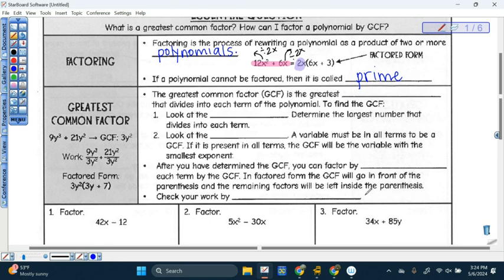So the greatest common factor, which is what we talked about last week, is just the greatest monomial that divides into each term of the polynomial. So to find the greatest common factor, we need to look at first the coefficients and determine the largest number that divides into each of those coefficients. So let's look at this example right here. 9y cubed plus 21y squared. What numbers are the coefficients? What numbers are the coefficients in this example here? 9 and 21. Coefficients just mean the numbers in front of the variables. And what's the greatest common factor of 9 and 21? It's 3.